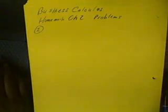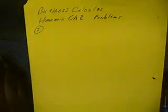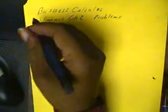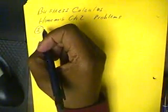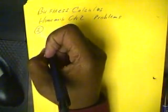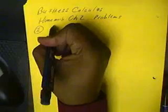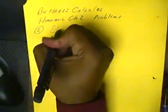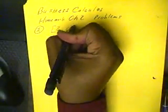Okay, business calculus. This is homework from chapter 2 and we're doing problems there. Number 2 says to calculate the average rate of change of the given function over the interval 2 to 6.